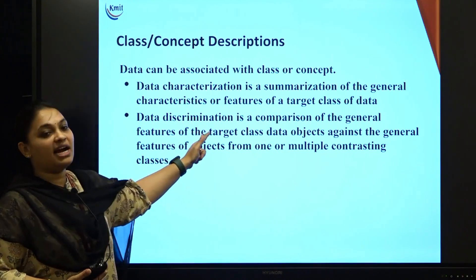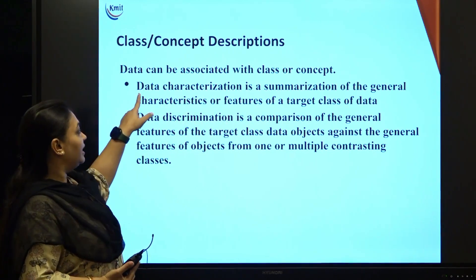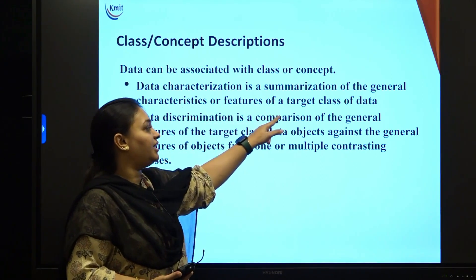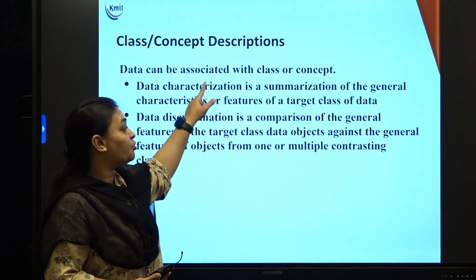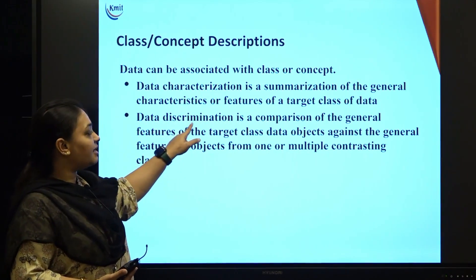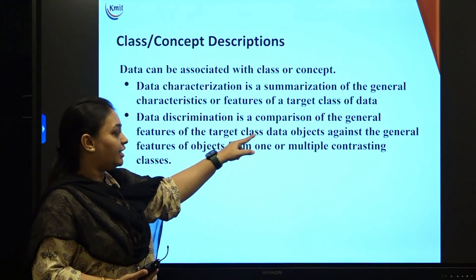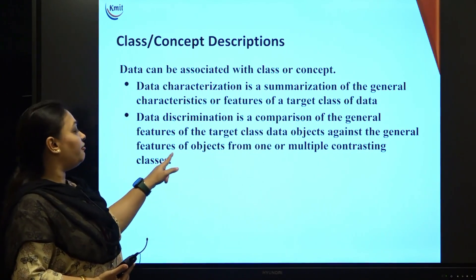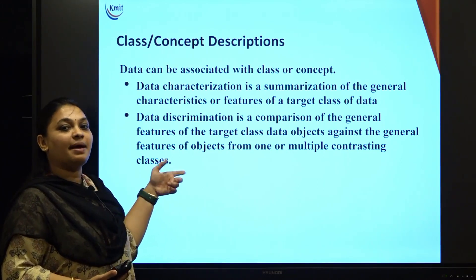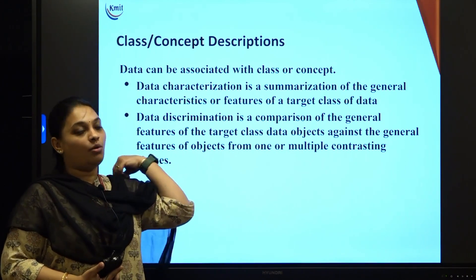That is your data discrimination. Data can be associated with a class or concept. Data characterization is a summarization of the general characteristics or features of the target class of data — it is the summary or overview of a class or concept. Data discrimination is a comparison of the general features of the target class data objects against the general features of objects from one or multiple contrasting classes. Using the toothpaste example, we judge which product the consumer wants.